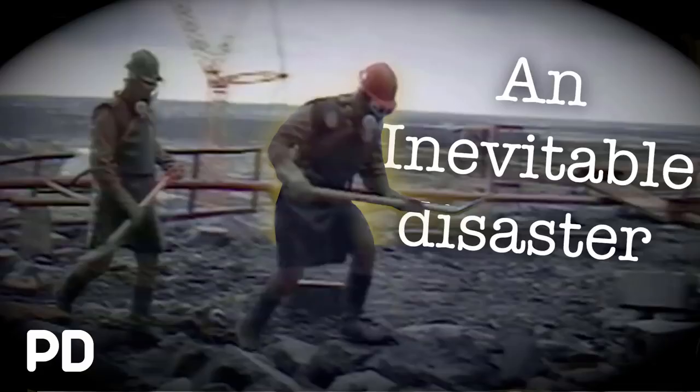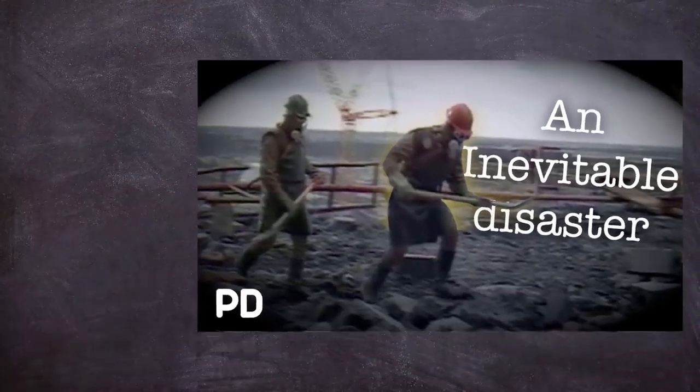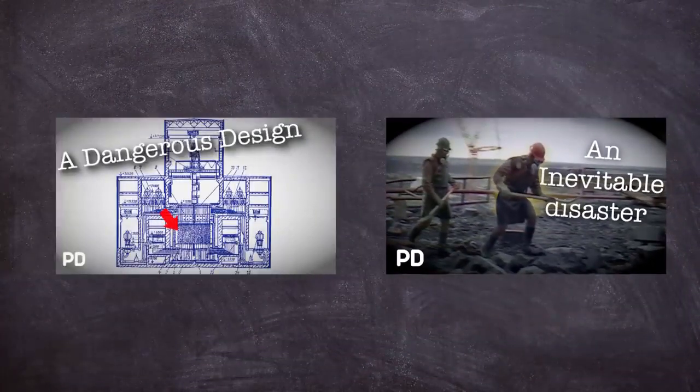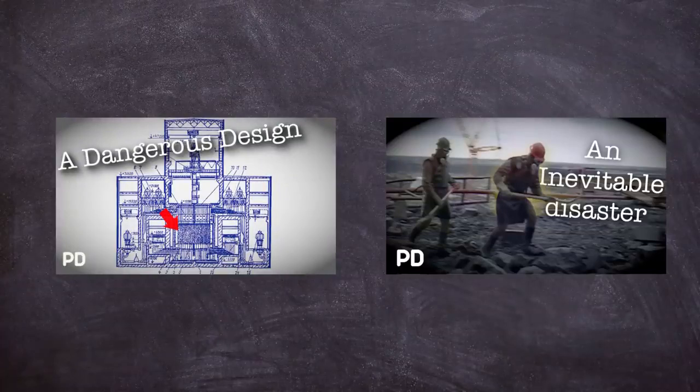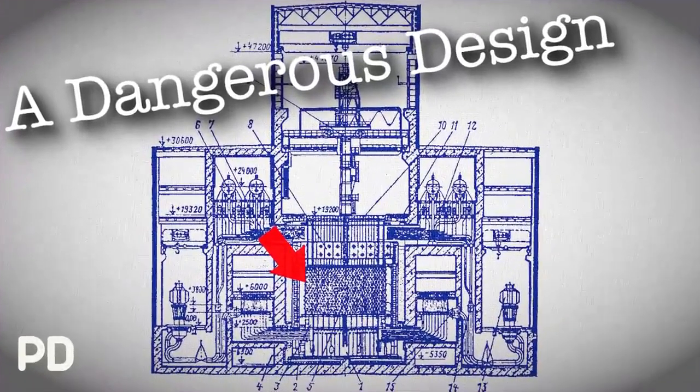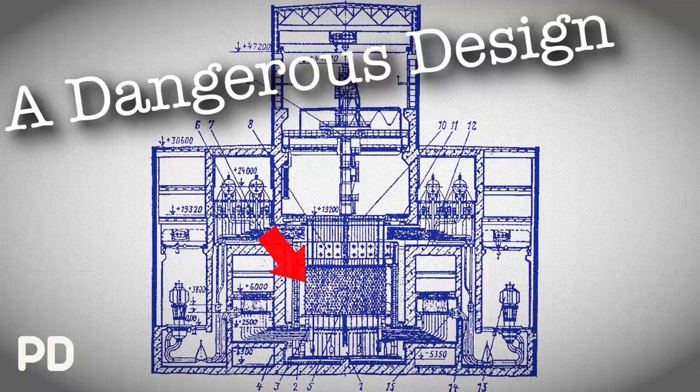Today we are looking at the Chernobyl disaster of 1986, and this one has earned the magical 10 on my patented Plain Difficult disaster scale. This video is part of a series on the Chernobyl disaster and the RBMK reactor type. It might be worth checking out my video on the Leningrad and other Chernobyl meltdown.